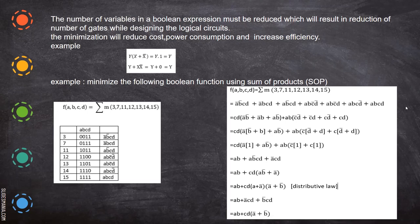So you add all these minterms to get the sum of products. Now you apply the Boolean laws to reduce it. For example, CD is common in the first three terms — wherever CD is common, you bring it outside. Here C3 is taken: A-bar B-bar, A-bar B, and A B-bar, with CD taken outside. Then in those four terms, AB is common — you take AB outside with C-bar D-bar, C-bar D, C D-bar, and CD. Taking A-bar common, B-bar plus B is one. Similarly C-bar outside, then C-bar plus C becomes one. So you end up with AB.